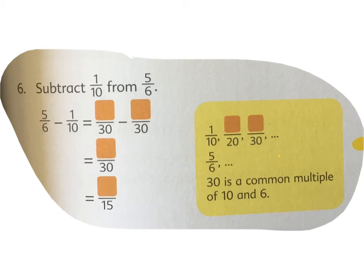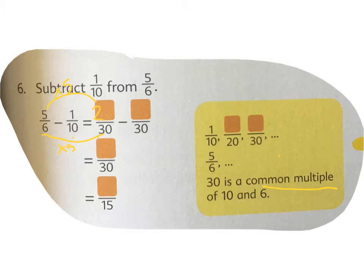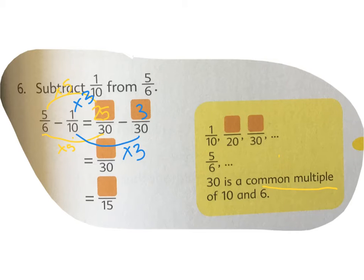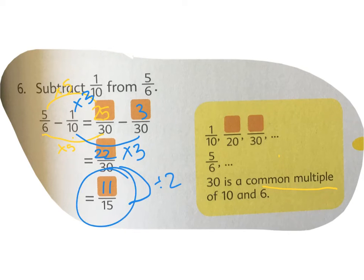Subtract one tenth from five sixths. They were looking for the common multiple of six and ten and found that thirty is the common multiple. Five sixths: multiply by five — twenty-five thirtieths. One tenth to thirtieths: multiply by three — three thirtieths. Twenty-five thirtieths minus three thirtieths gives twenty-two thirtieths. They reduced it by dividing by two — eleven fifteenths.